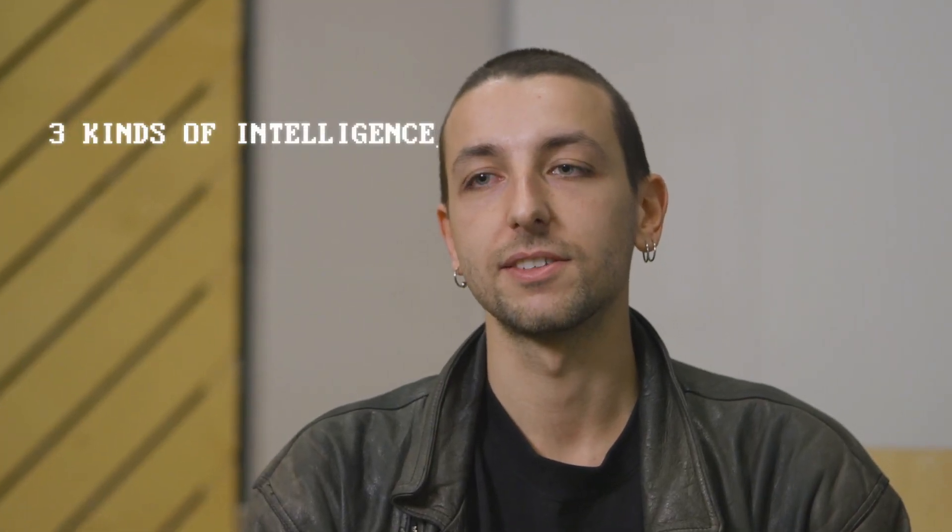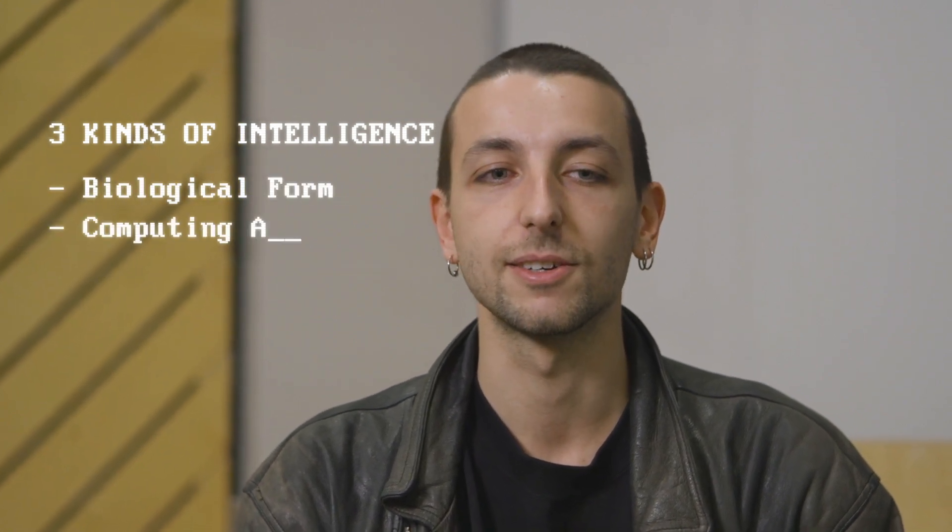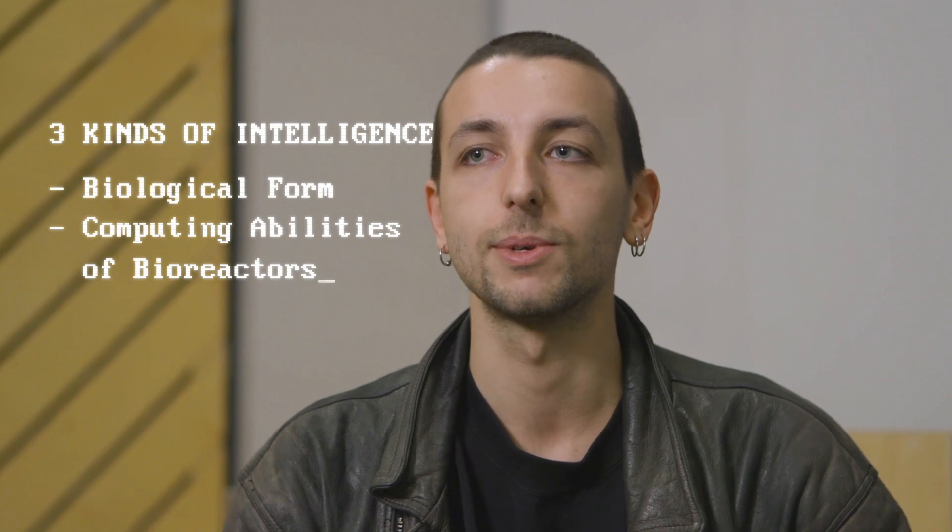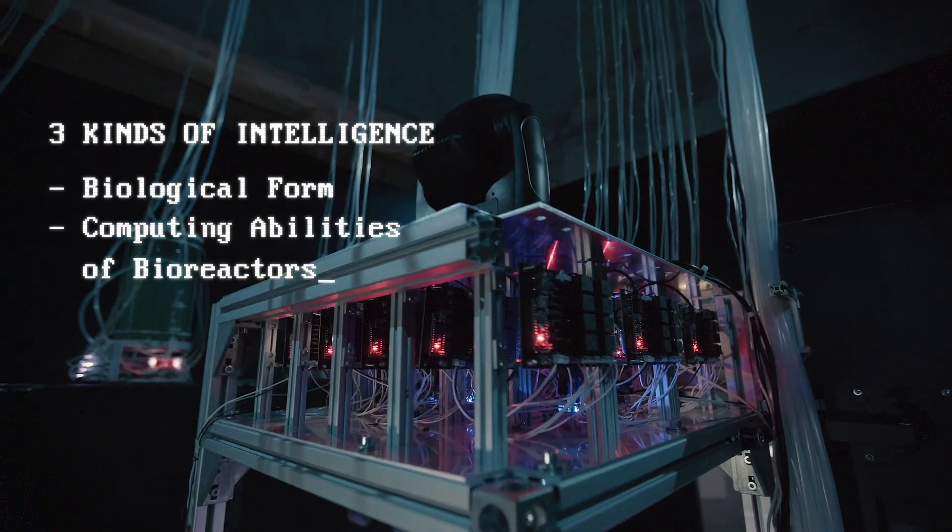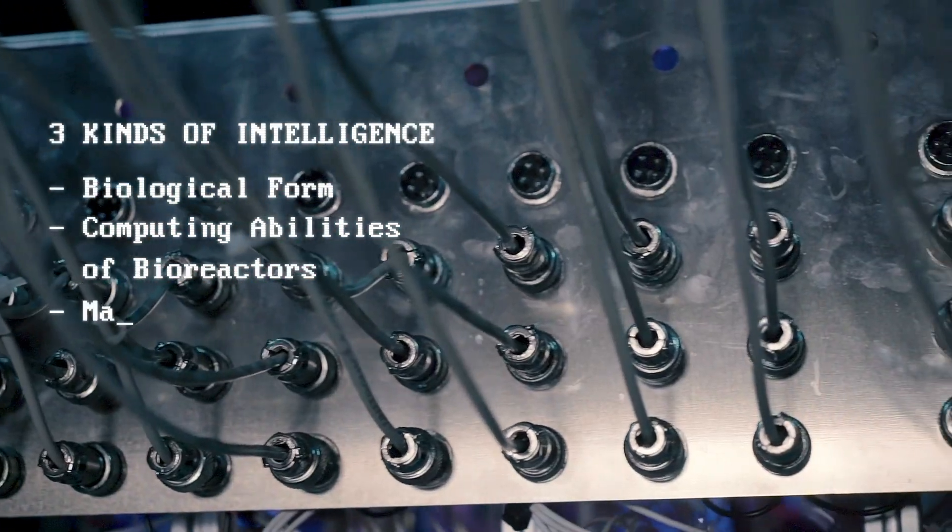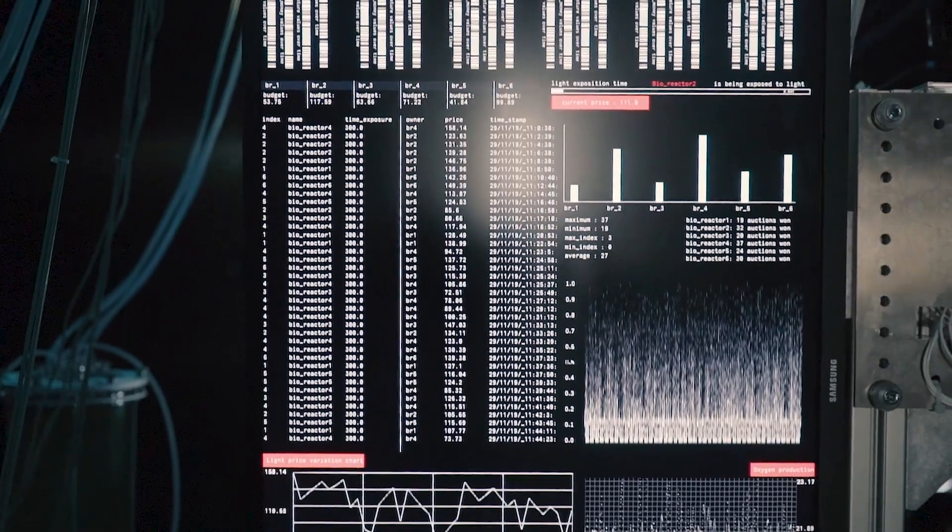So in this project, there are three kinds of intelligence interacting together. There is the biological form of intelligence that the bacteria can exhibit. There is the computing abilities of the bioreactors who basically just want the bacteria to stay alive. And then there's a third form of computing and cognition, which is the one of the genetic algorithm that is managing the market. So those three entities want things pretty different.